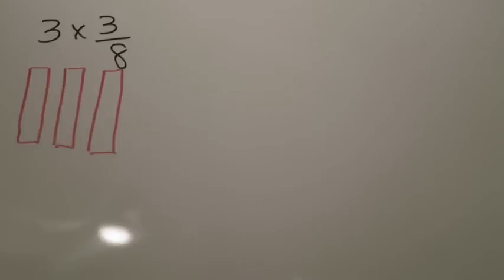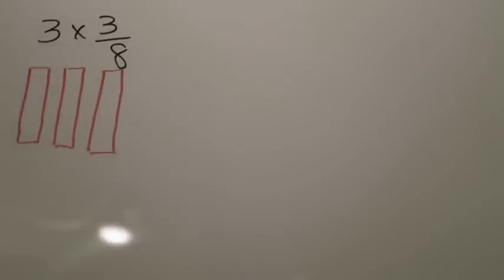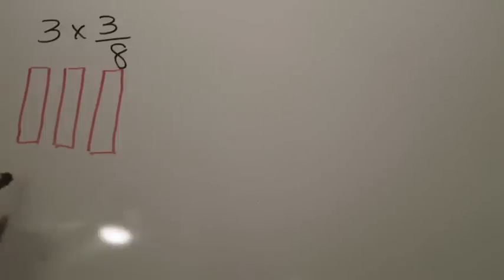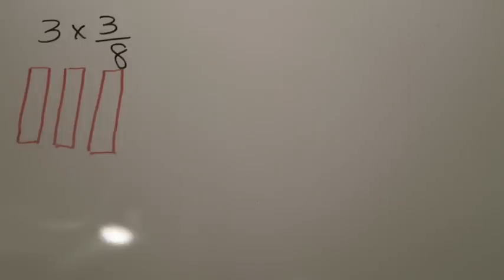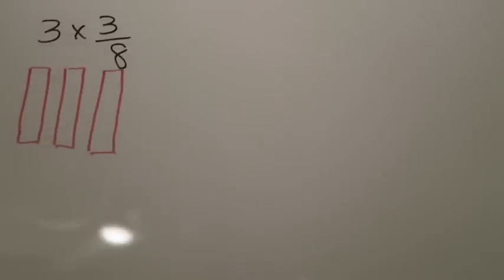Here we have our first example for lesson 7.2. We are going to model how to find 3 times 3/8. The first thing you want to do is look at your problem and use the parts of it to figure out what it's telling you. Your whole number tells you how many wholes to create in your model — so we're going to create three wholes. Next, look at your denominator, which tells you how many pieces to divide each whole into. Here the denominator is 8, so take each whole and divide it into eighths.